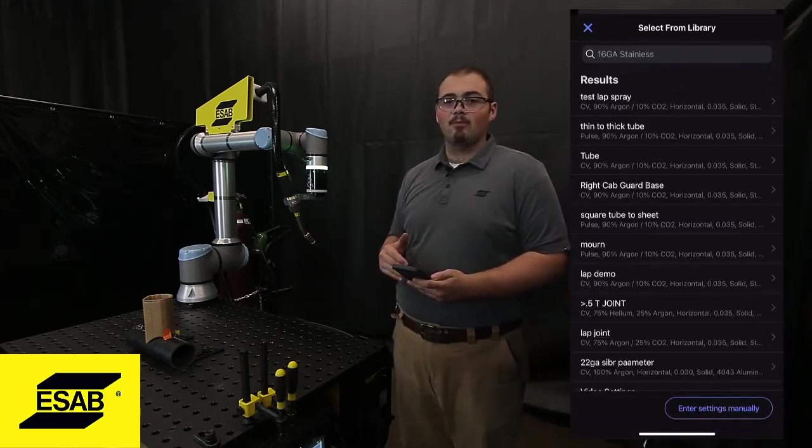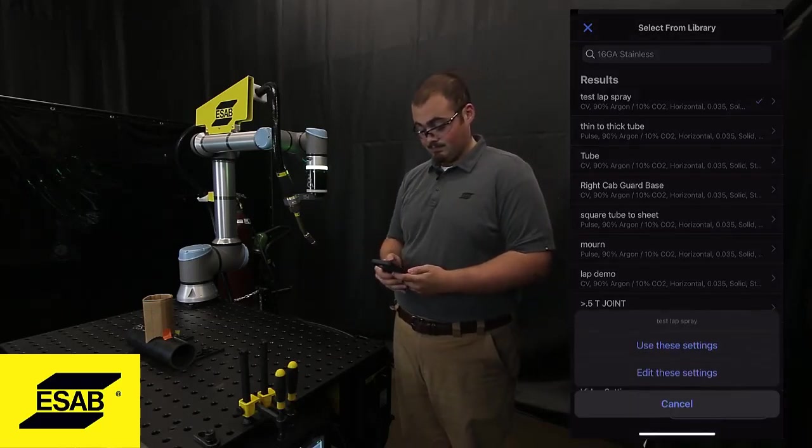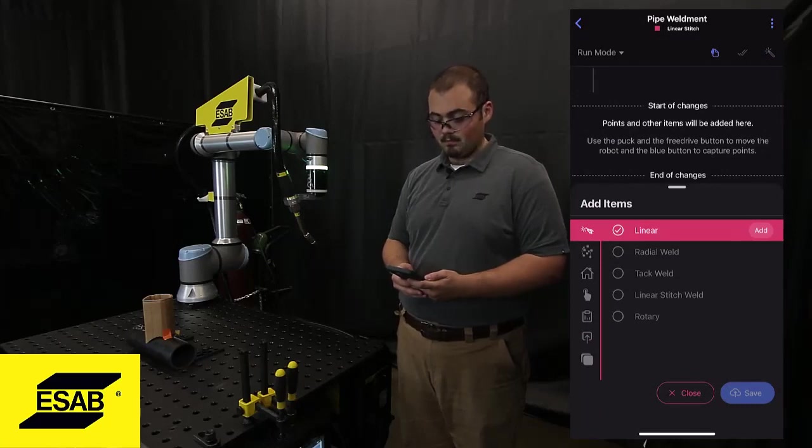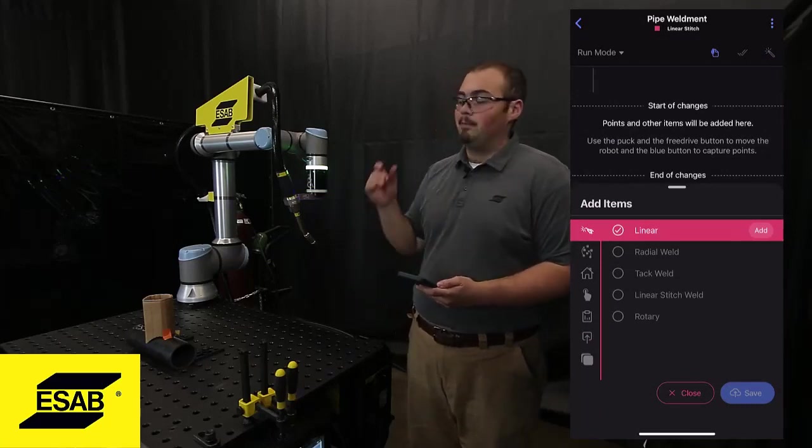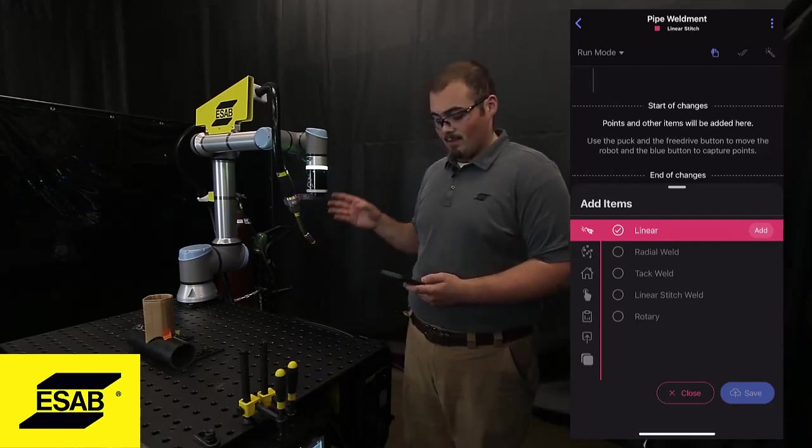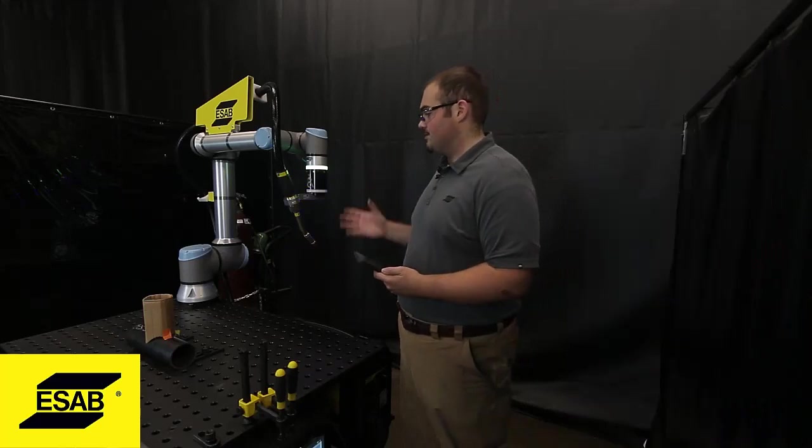Under the settings library, I'm going to select my settings and now I'm in the teach menu. So for a pipe weldment, I'm going to select radial weld and now I am ready to teach some points.